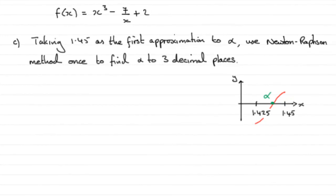Now for this last part, taking 1.45 as the first approximation to alpha, we've got to use Newton-Raphson's method once to find alpha to three decimal places.